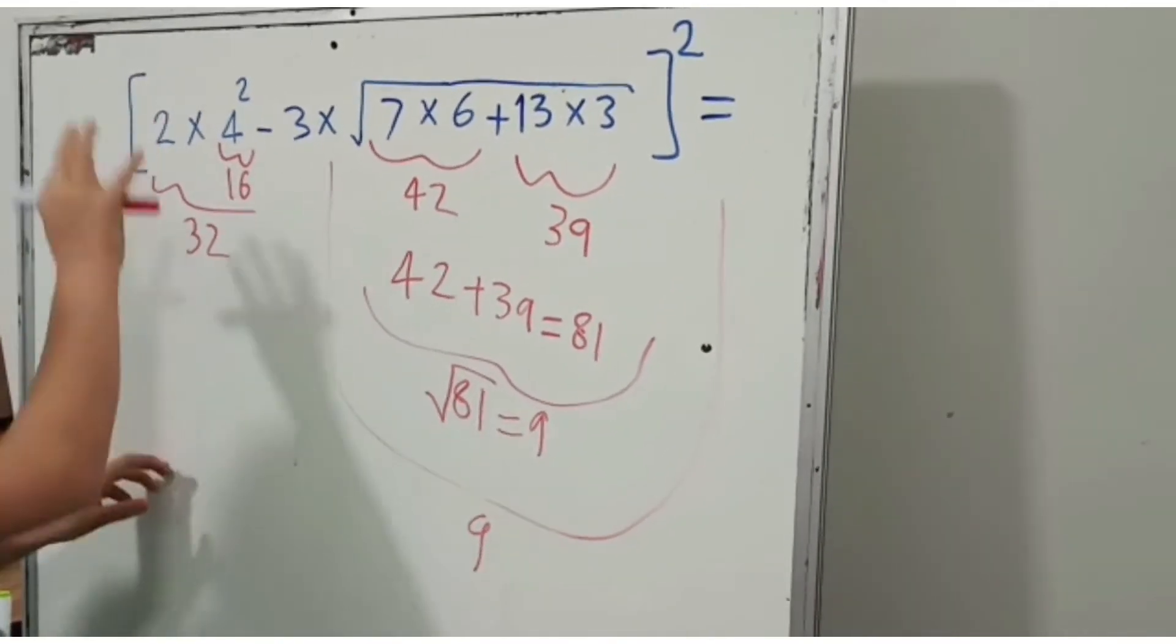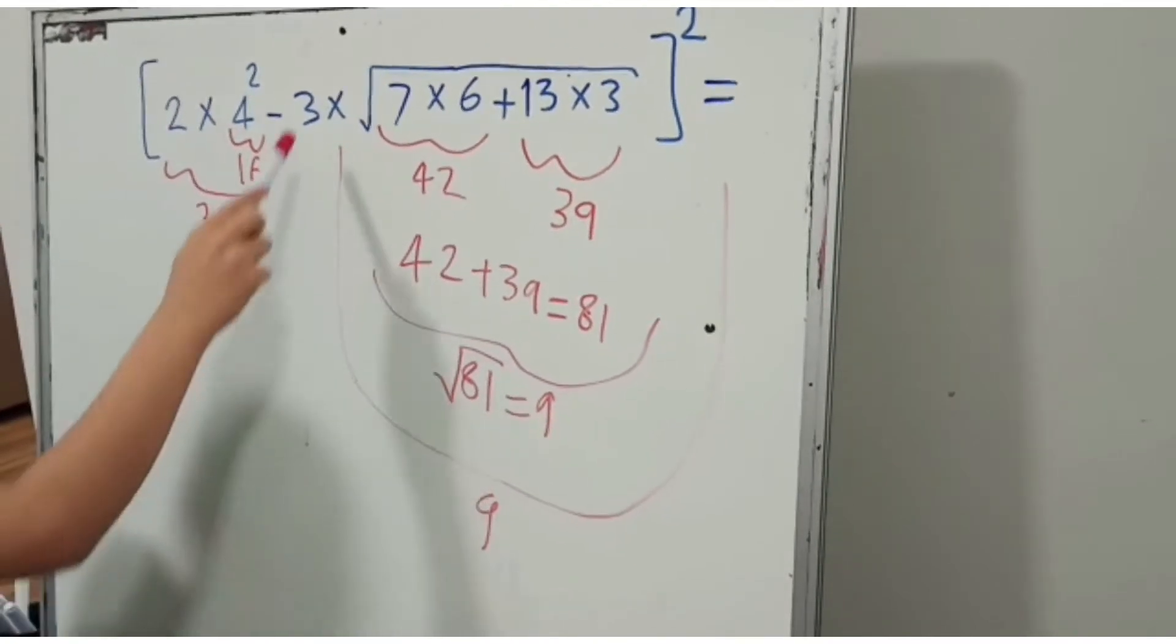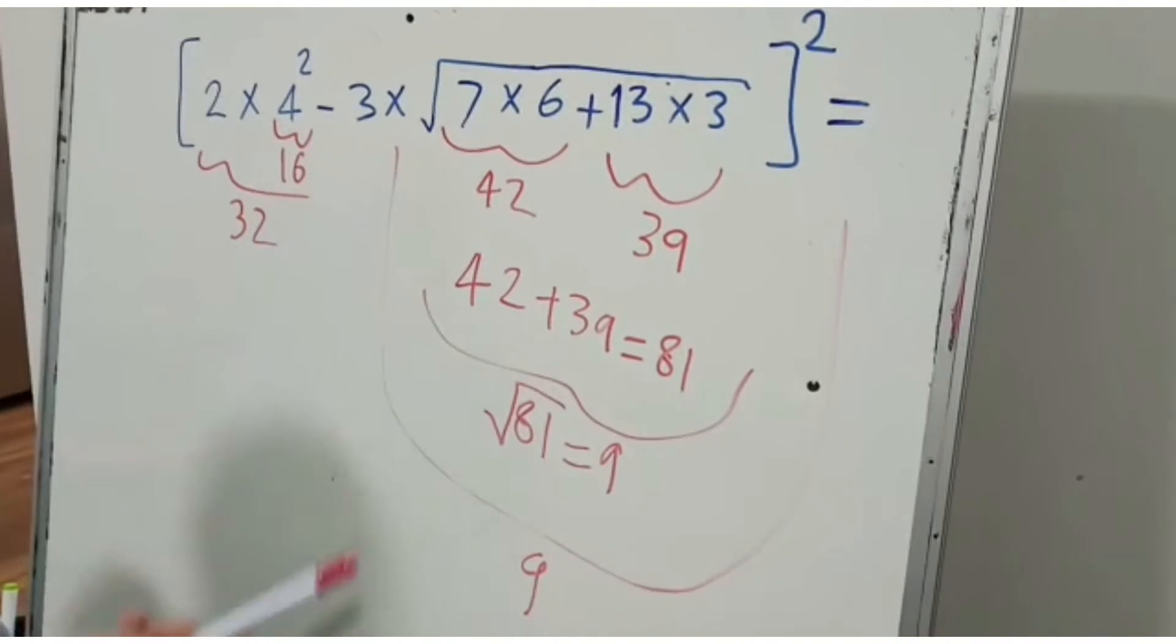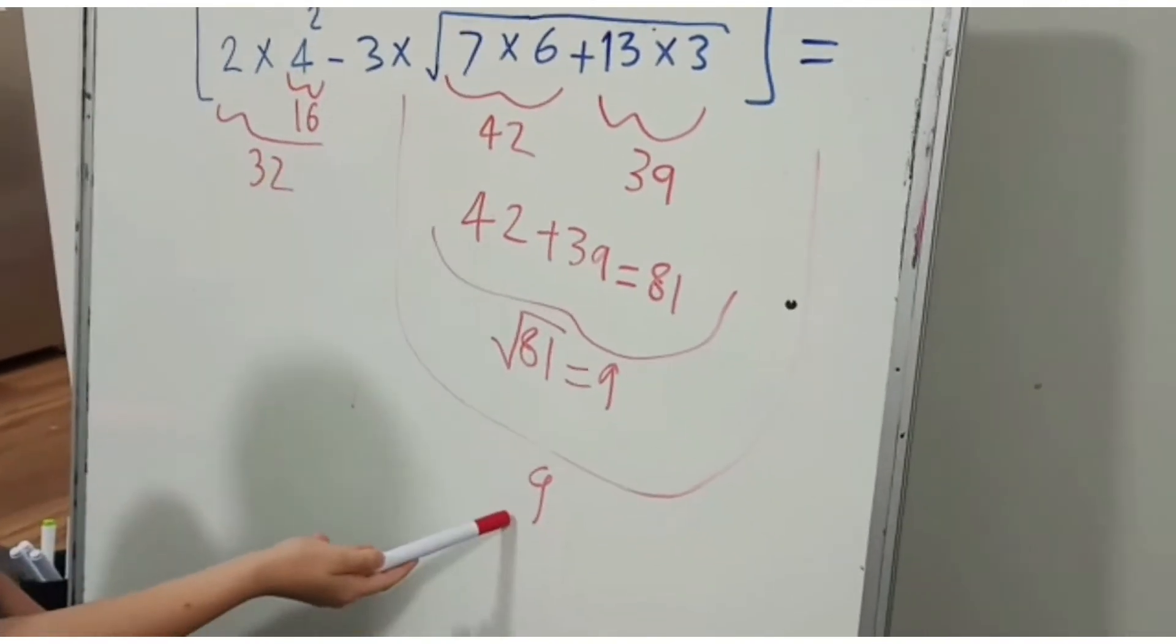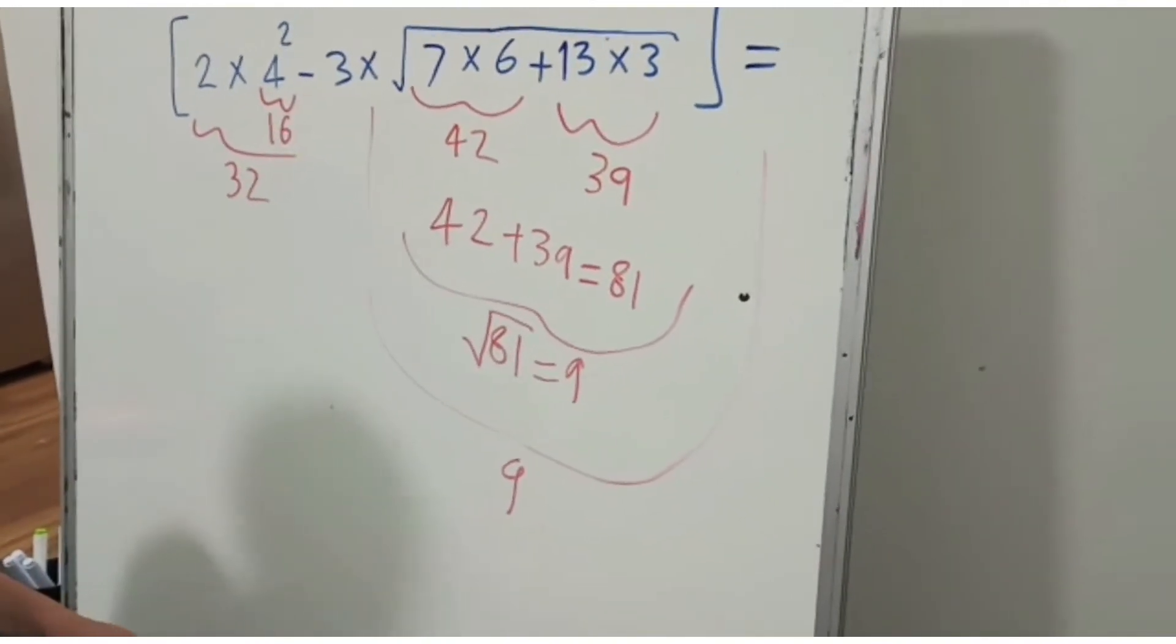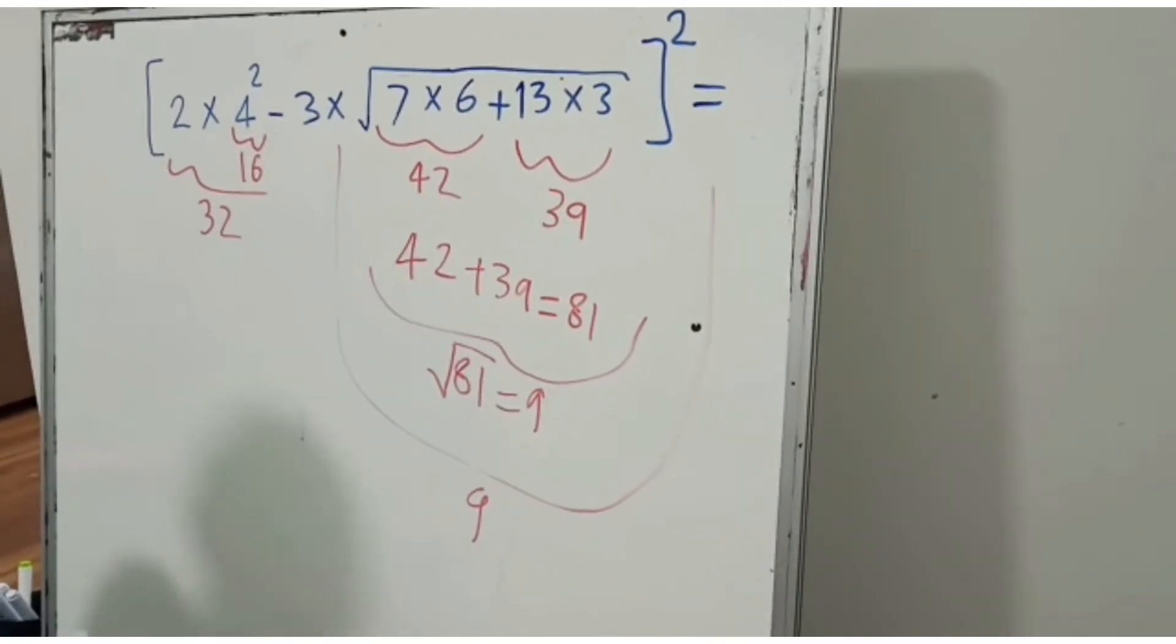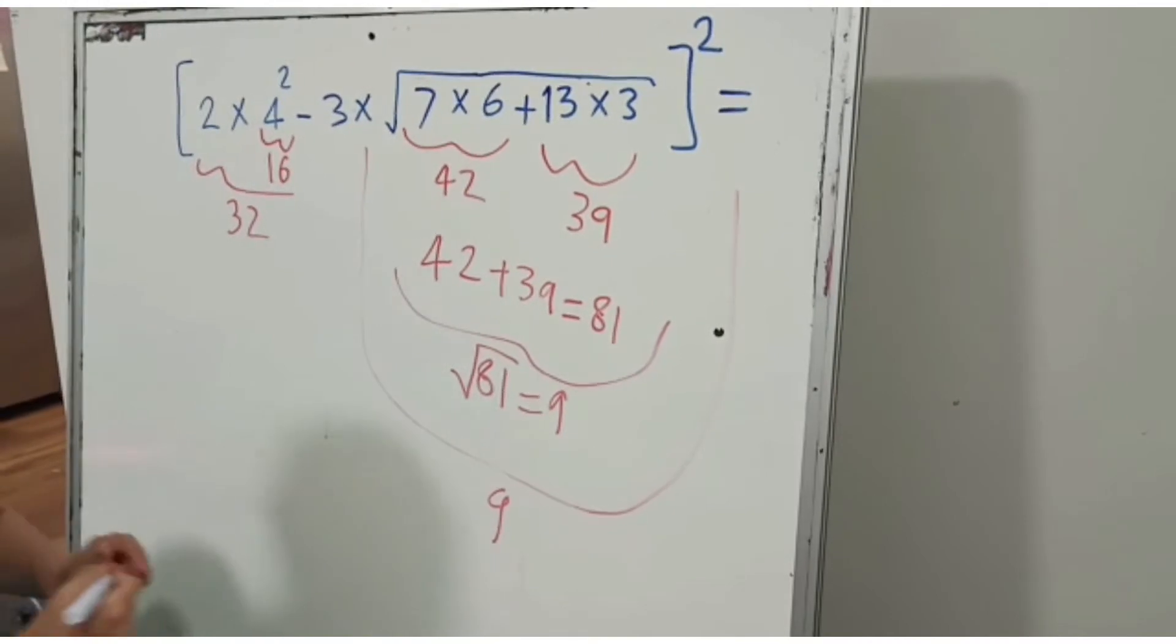Now for this part we haven't used the 3 times yet, so we need to use it against the 9. 3 times 9 equals 27.